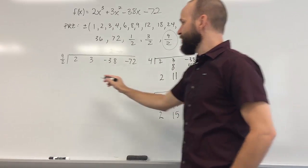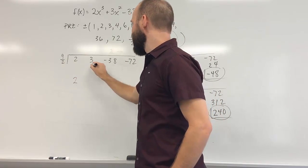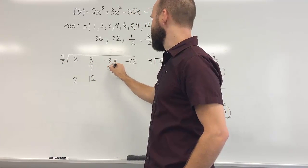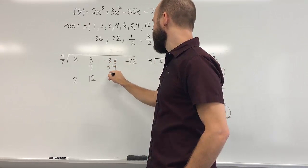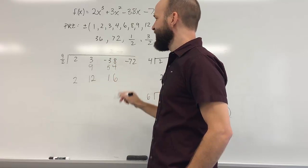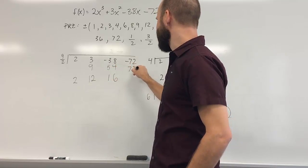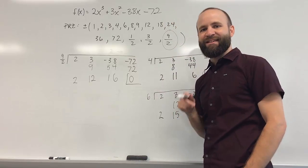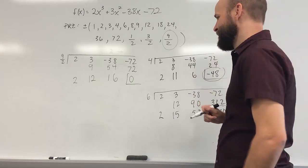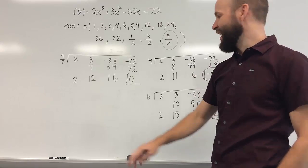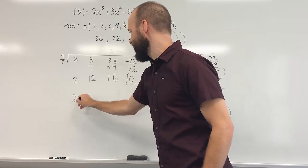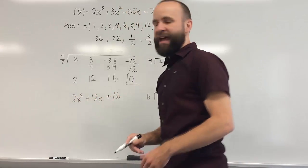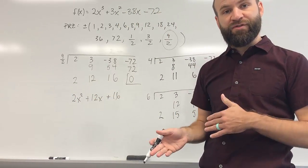If I try 9/2 using synthetic division: 2; 2×(9/2)=9; 3+9=12; 12×(9/2)=54; −38+54=16; 16×(9/2)=72; −72+72=0. So 9/2 is a zero, just as we suspected. And I'm left with a quadratic factor of 2x² + 12x + 16, which I can factor directly to find the other two zeros.